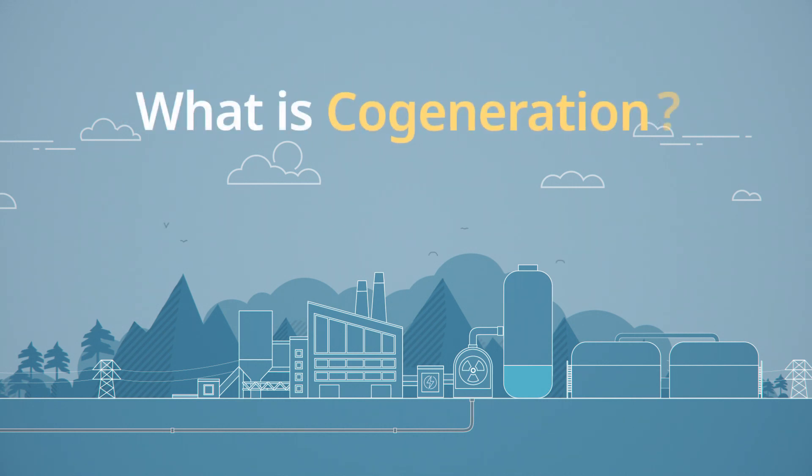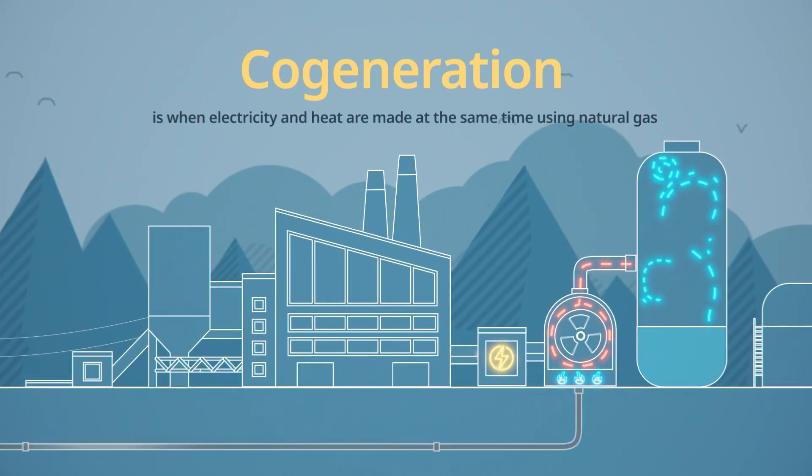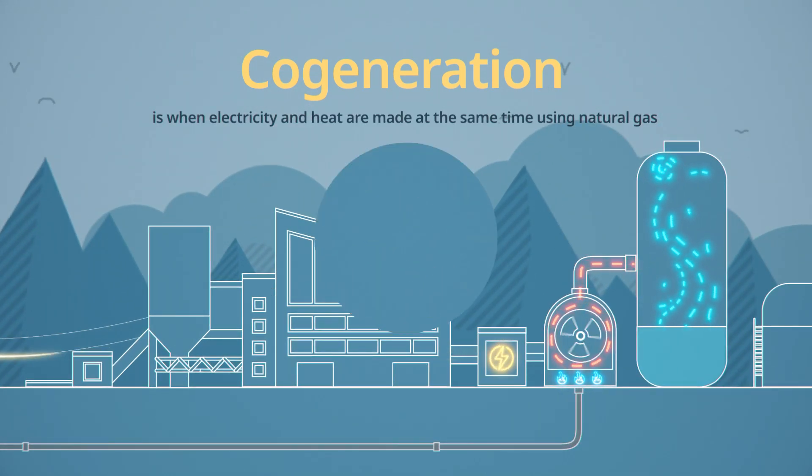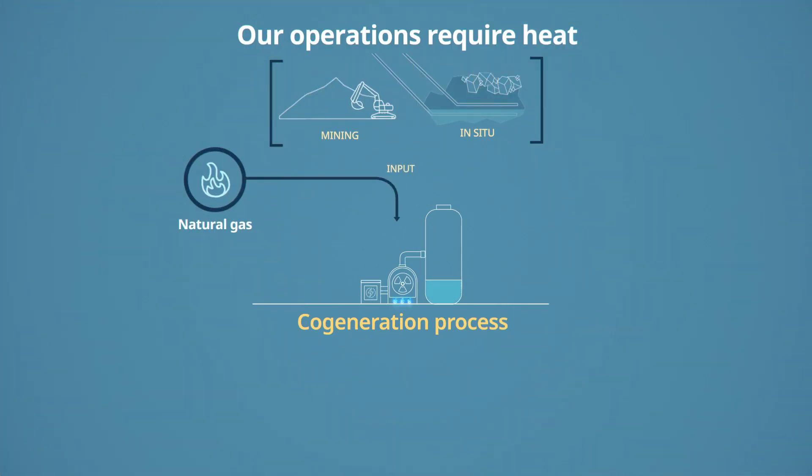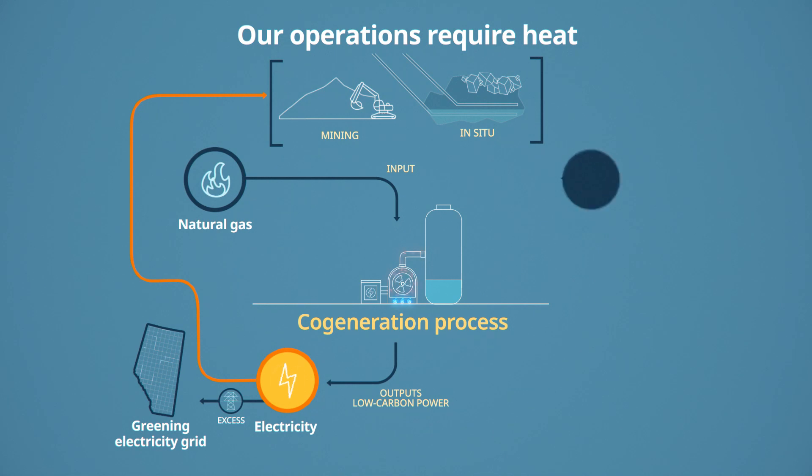So what is cogeneration? Cogeneration is when heat and electricity are made at the same time using natural gas. The heat from burning natural gas is used to spin turbines that generate electricity and waste heat is used to create steam or hot water.